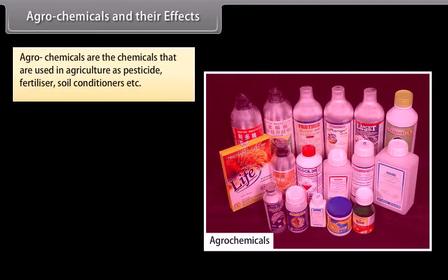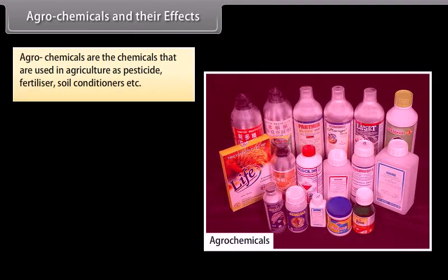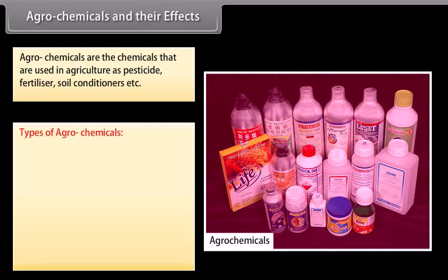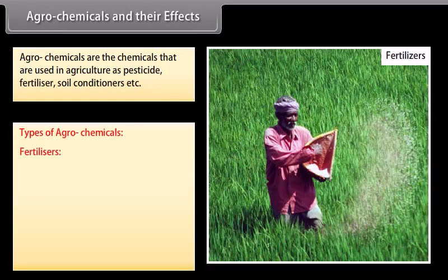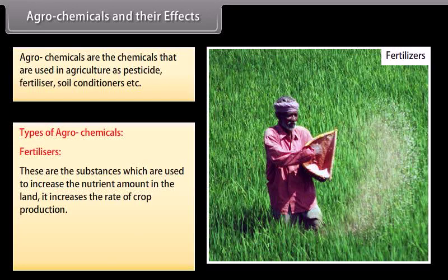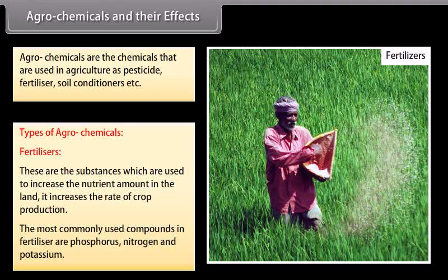Agrochemicals are the chemicals that are used in agriculture as pesticide, fertilizer, soil conditioners, etc. Fertilizers are substances used to increase the nutrient amount in the land and increase the rate of crop production. The most commonly used compounds in fertilizers are phosphorus, nitrogen, and potassium.